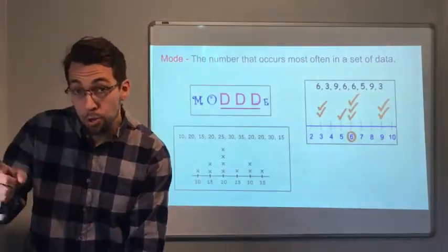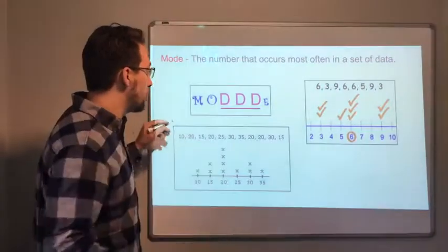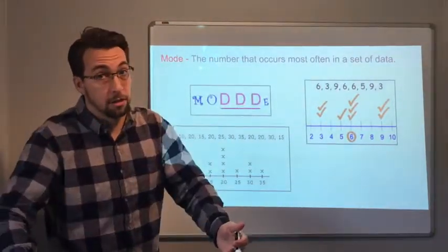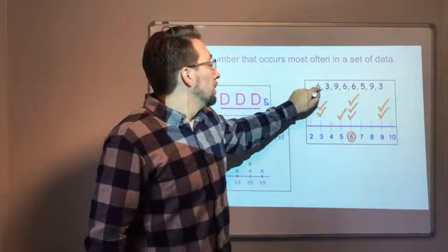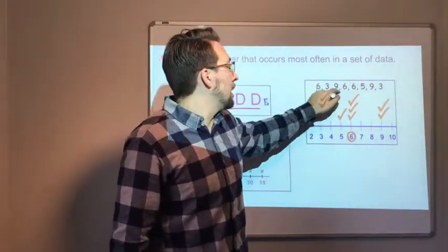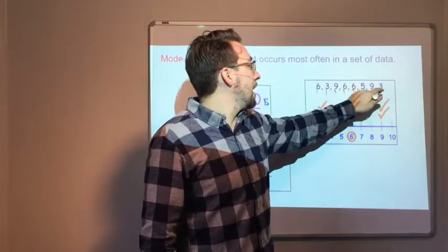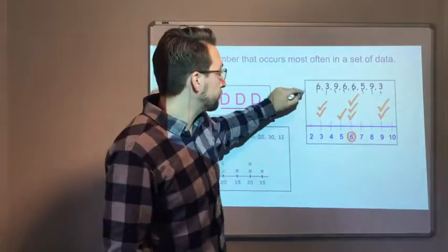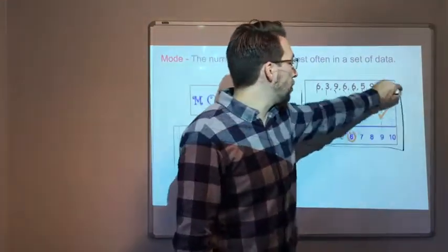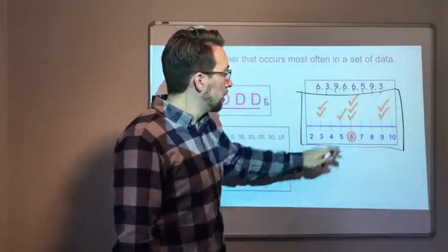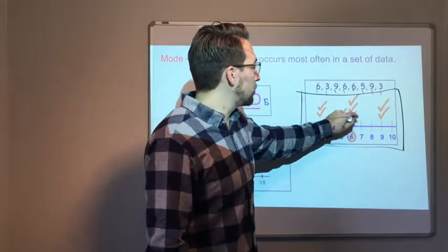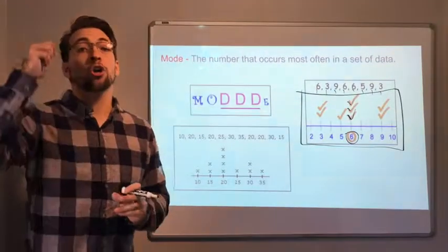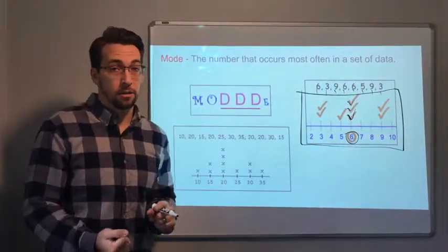Now, the mode. The number that occurs most often. So here's our data set: 3, or 6, 3, 9, 6, 6, 5, 9, 3. And we created a line plot or a dot plot. Six has the most checks. One, two, three. Six is the mode. The number that occurs most often.